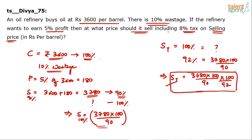We also have to pay 8% tax on the selling price — not on cost price. At whatever price I sell, 8% goes to the income tax department, leaving me with 92%. I want that 92% to equal my required selling price, so I cross multiply to get the final price including taxes.